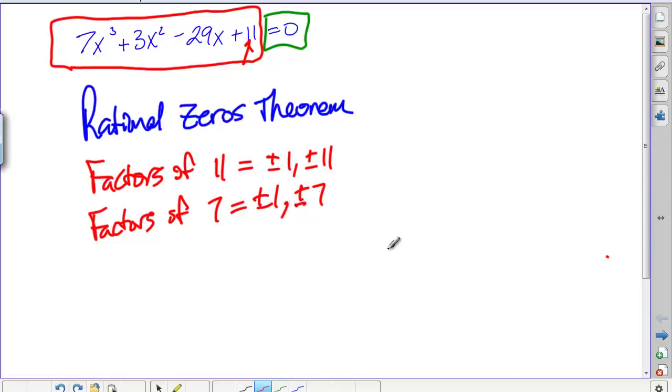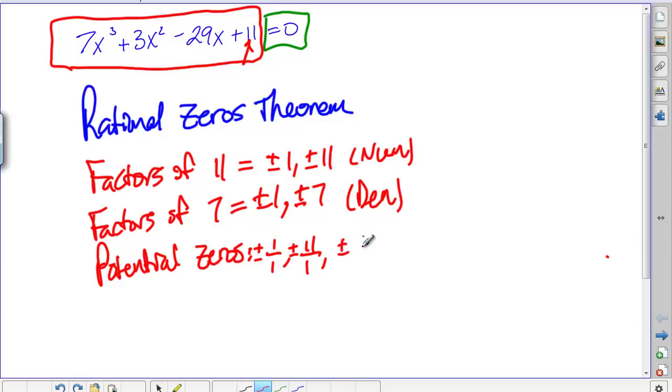And you can make fractions to get potential zeros, and it just comes from looking at these as numerators and these numbers as denominators. So we can do like 1 over 1, 11 over 1, positive and negative on those, and then both of these numbers, 1 over 7 and 11 over 7.